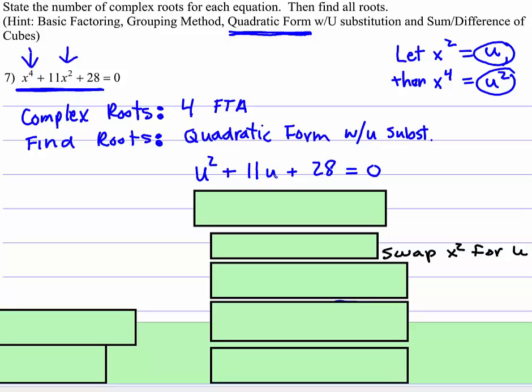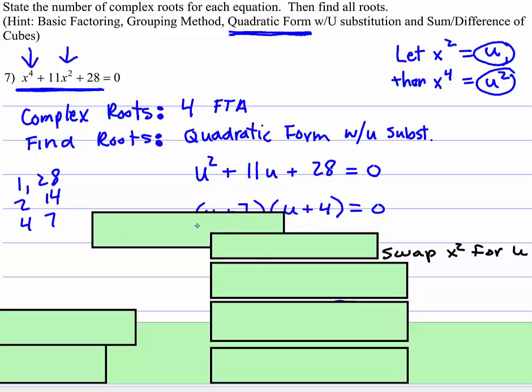And then this is just a regular quadratic that we'll factor. What are factors of 28 that add up to 11? Well, let's see. Let's look at the factors. There's 1 and 28, 2 and 14. They don't add up to 11. Oh yeah, 4 and 7.